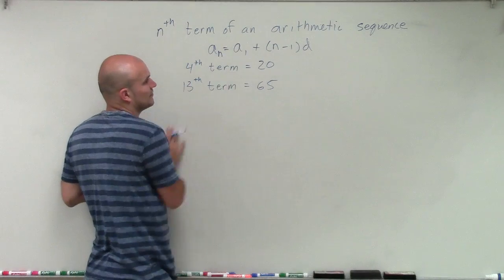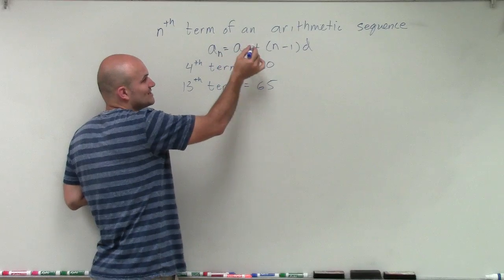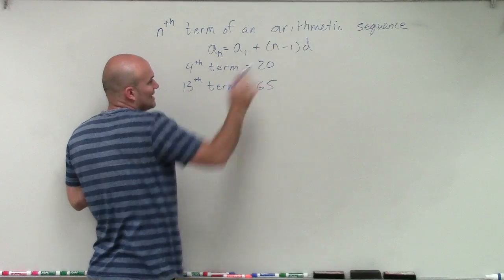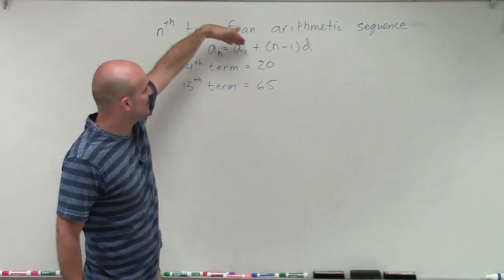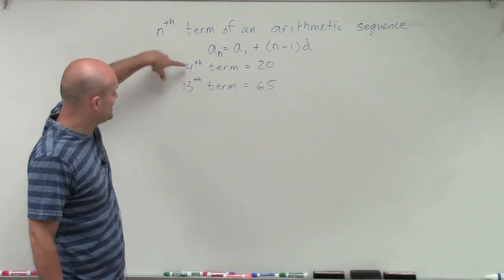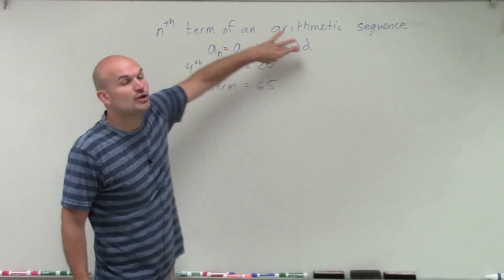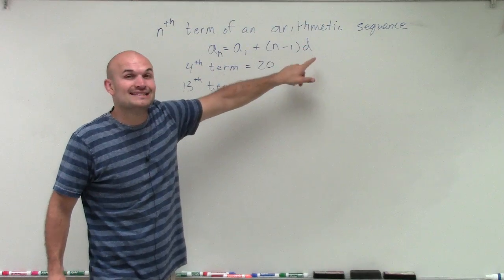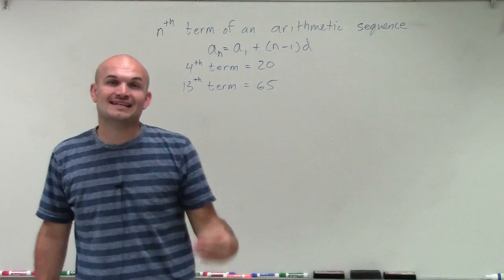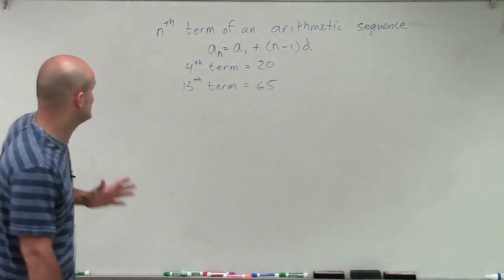So our general formula that we have for our arithmetic sequence is a sub n equals a sub 1 plus n minus 1 times d. However, in this case, we're not given a sub n or a sub 1. We're given a sub 13 and a sub 4. So I'm going to now plug in those values into this equation so I can find d, because we need to make sure we can find the difference when we're talking about arithmetic sequences.